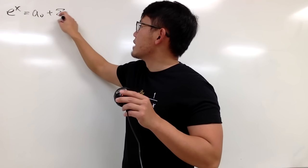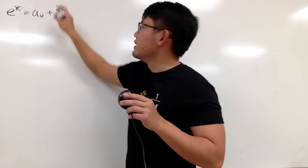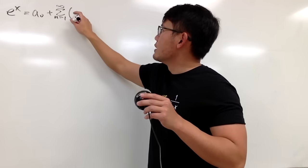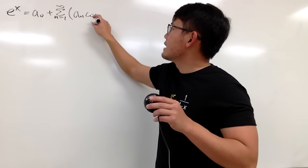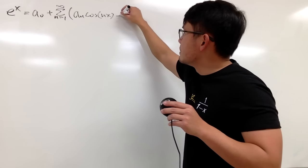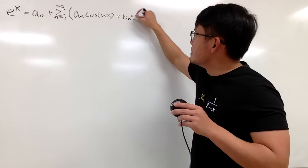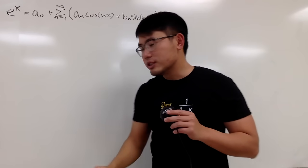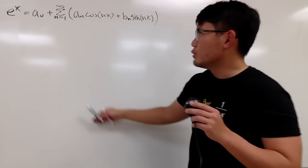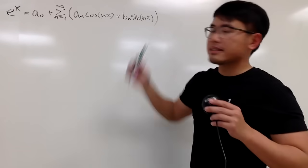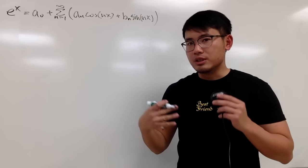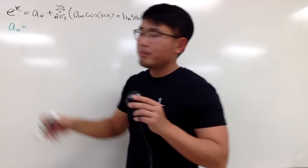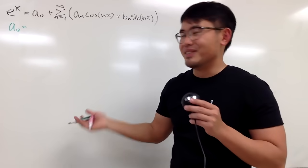e to the x — thanks to Fourier, we know this is equal to a₀ plus the sum as n goes from 1 to infinity. I'll put everything into one summation: the first part is aₙ times cosine of nx, and the second part is bₙ times sine of nx. From the previous video I already showed you how to get these, so in this video we'll just be using those formulas.